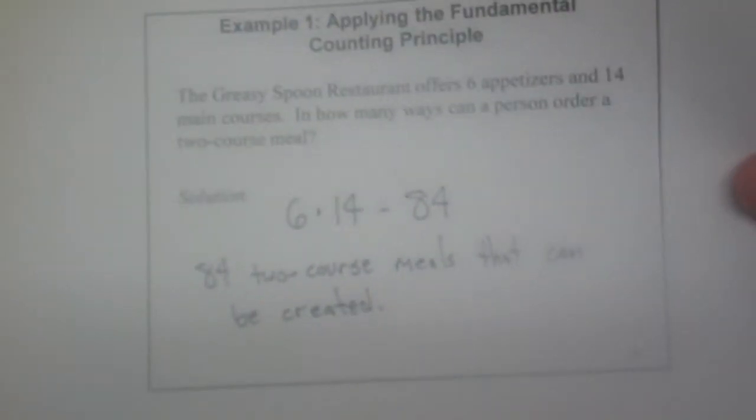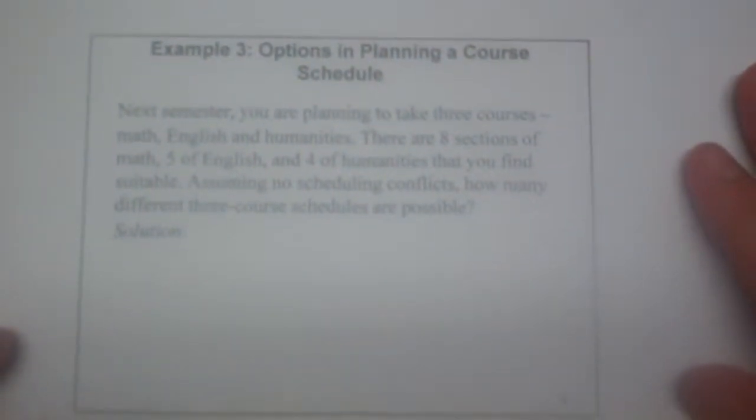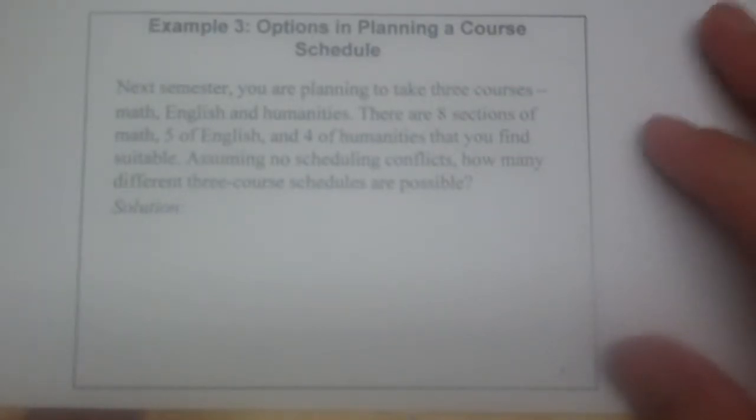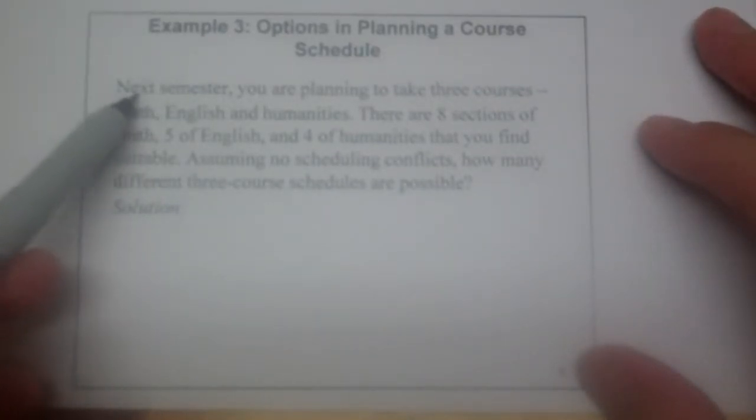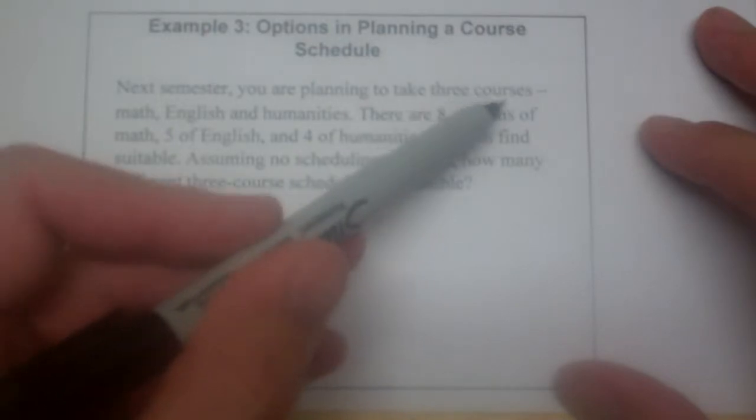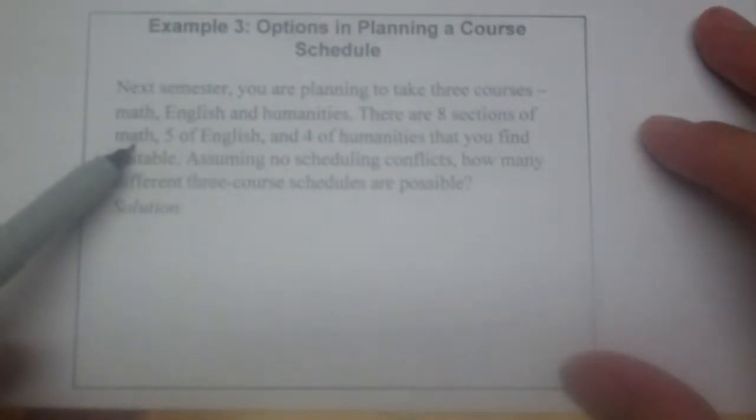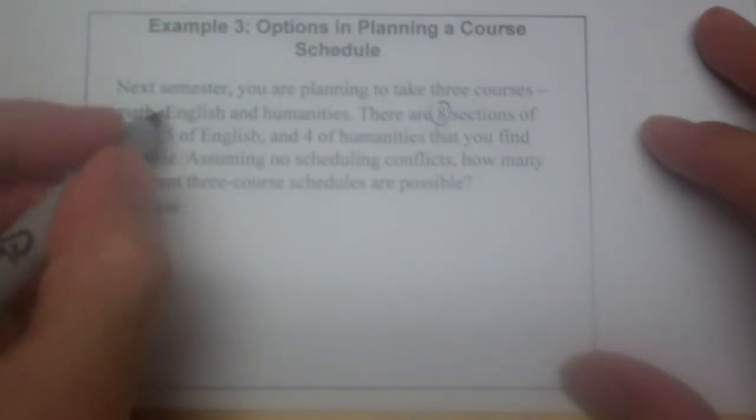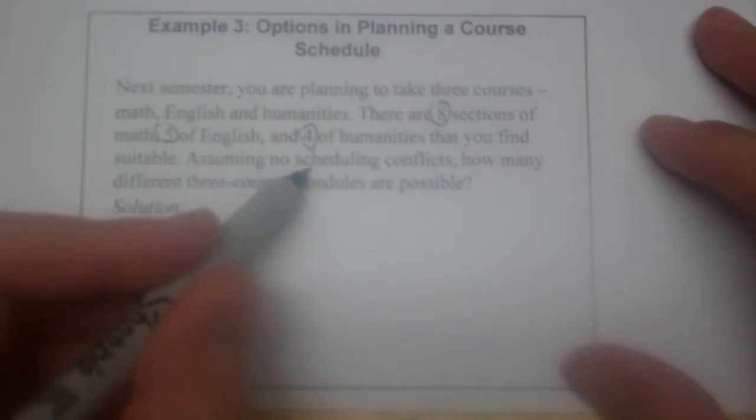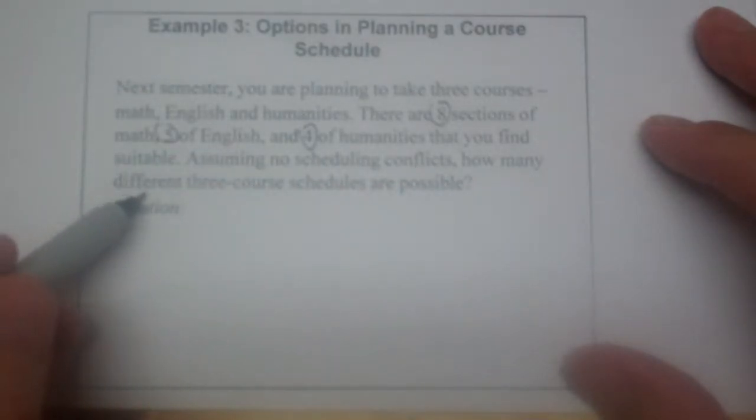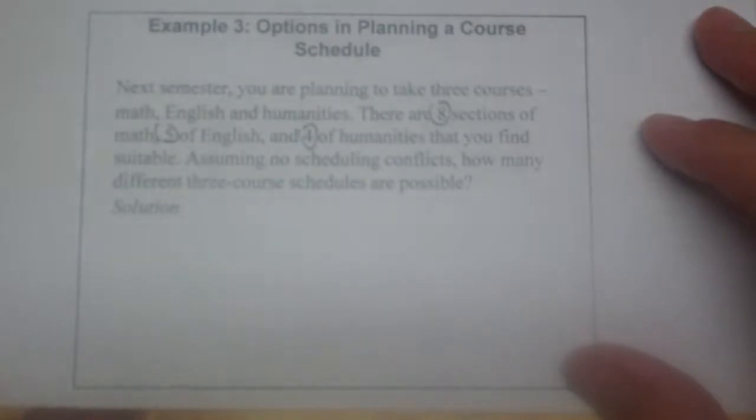Let's do another example. Apparently I didn't like example two, so I went straight to example three. Next semester, you're planning on taking three courses: Math, English, and Humanities. There are eight sections of math, five sections of English, and four sections of Humanities. Assuming no scheduling conflicts, how many different three-course schedules are possible?